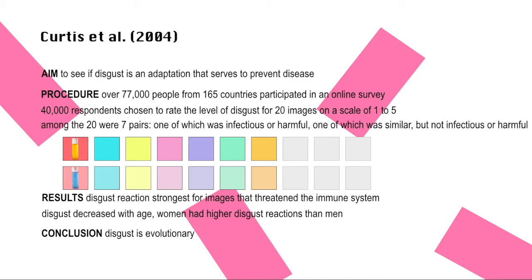The results showed that the disgust reaction was strongest for images that threatened the immune system. Disgust also decreased with age, and women had higher disgust reactions than men. This supports the conclusion that disgust is evolutionary — natural selection may have helped our ancestors to be more disgusted at things that threaten their immune system, avoiding diseases or sicknesses, allowing them to survive and pass on their traits. The decrease in disgust with age can be explained because older people are less likely to reproduce. The stronger disgust reaction in women may be because they carry offspring and need to ensure the offspring's survival.